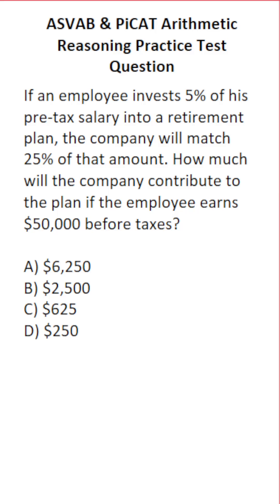This arithmetic reasoning practice test question for the ASVAB and PiCAT says: if an employee invests 5% of their pre-tax salary into a retirement plan, the company will match 25% of that amount. How much will the company contribute to the plan if the employee earns $50,000 before taxes?